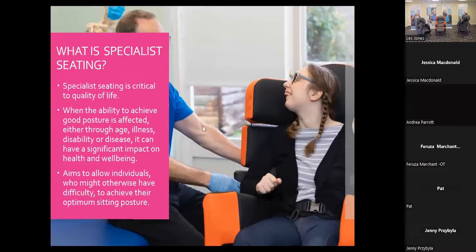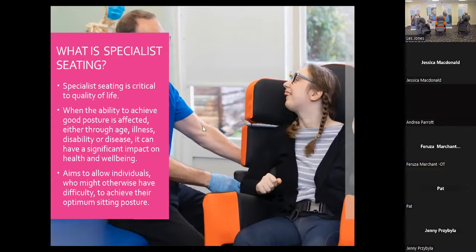Specialist seating is critical to quality of life when working with individuals whose ability to achieve good posture is affected — whether through age, illness, disease, disability, or injury — as it can have a significant impact on their health and wellbeing. In the simplest terms, specialist seating allows individuals who might otherwise have difficulty to achieve their optimum sitting posture.